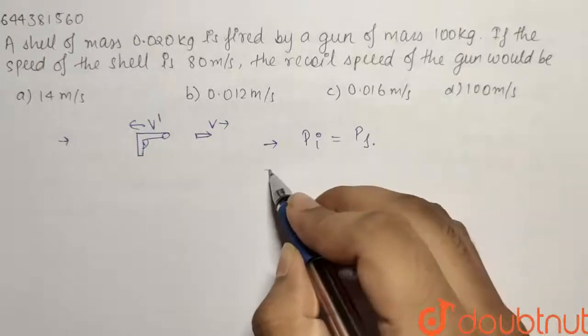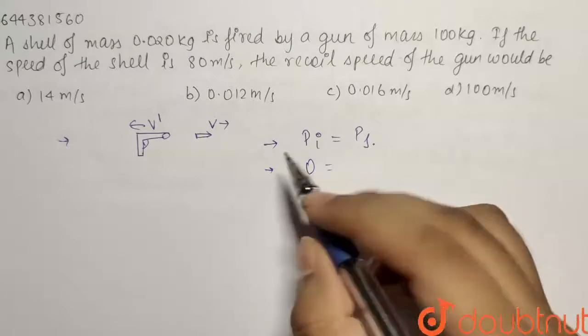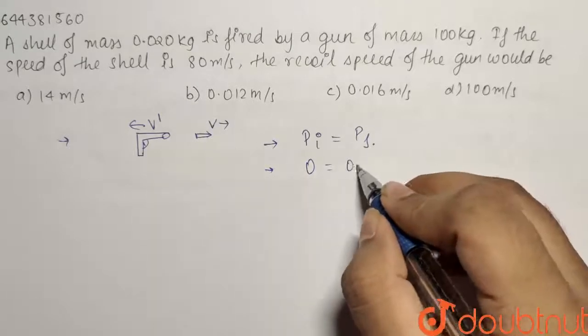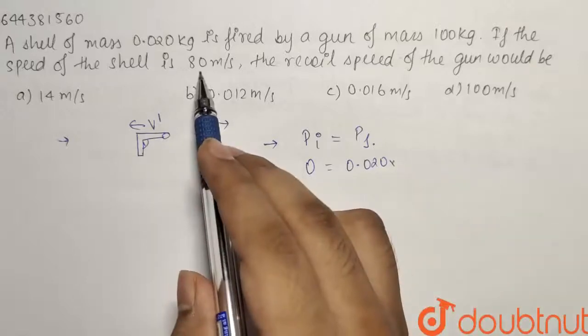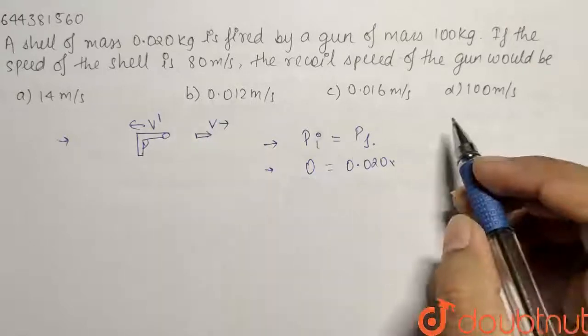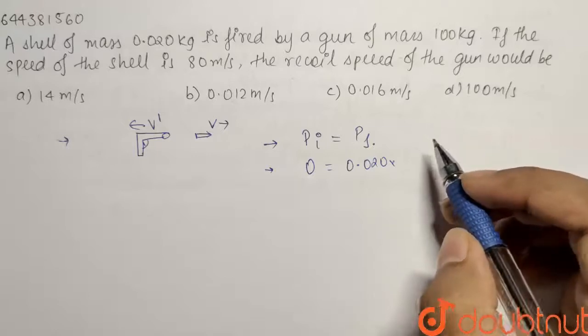So P initial will be equals to P final and what is your P initial? Initially the system was at rest and finally what is happening? The bullet is of mass 0.020 kg multiplied by its velocity. We have been given that it has a velocity of 80 meter per second after coming out of the gun.